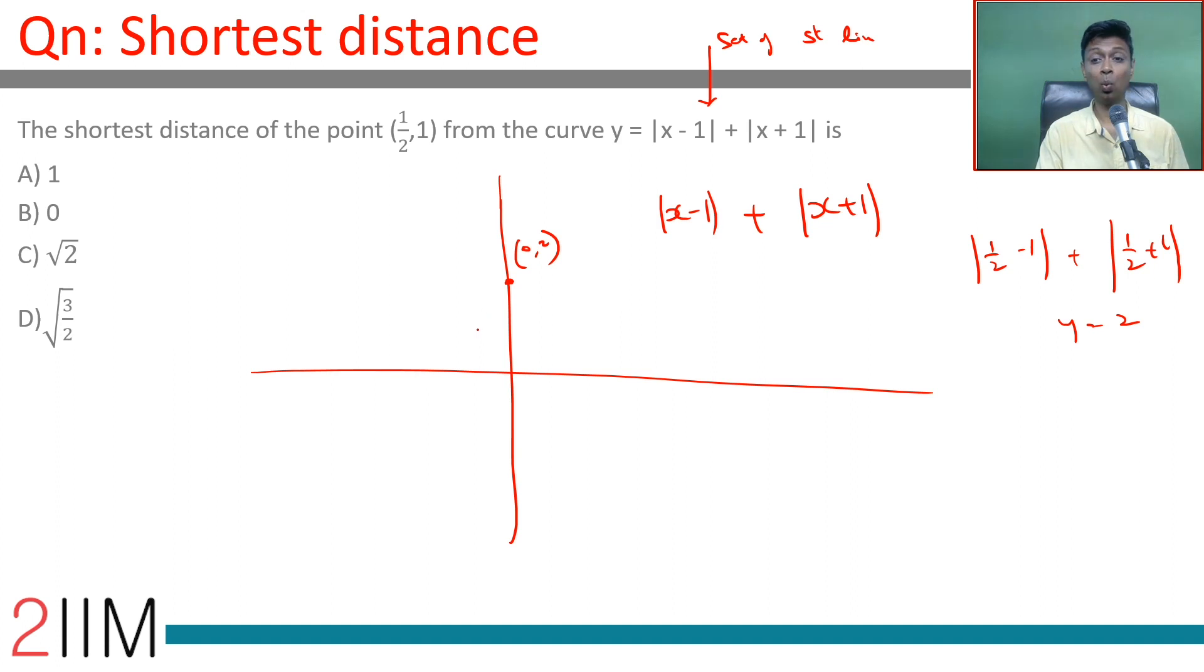When x = 1, we have |1 - 1| = 0 and |1 + 1| = 2, so (1, 2) is a point.